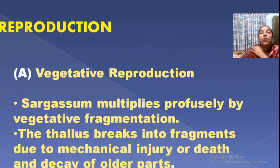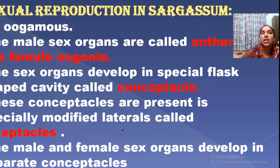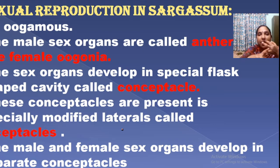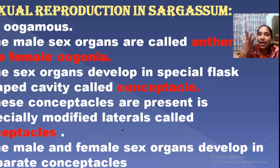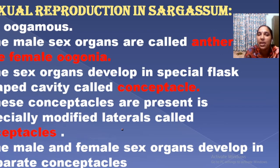Now, reproduction. Sargassum reproduces by vegetative and sexual means. There is no asexual reproduction. Vegetative reproduction is by fragmentation — breaking of the thallus, which then develops into a new plant. Sexual reproduction is oogamous, by the male sex organ antheridia and female sex organ oogonia. Antheridia form in male conceptacles, and oogonia in female conceptacles, which are produced in the branched structure known as the receptacle, present on the main axis.